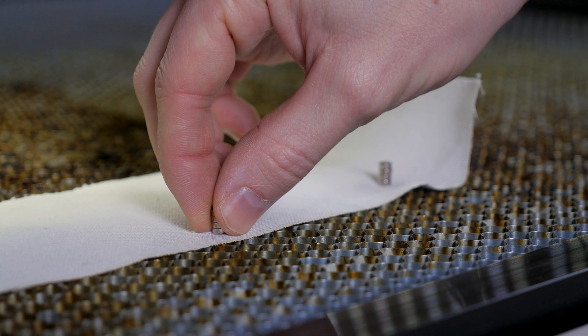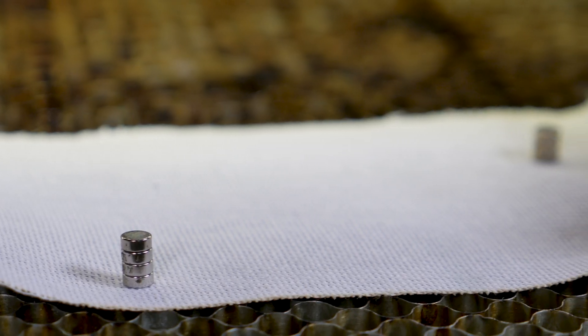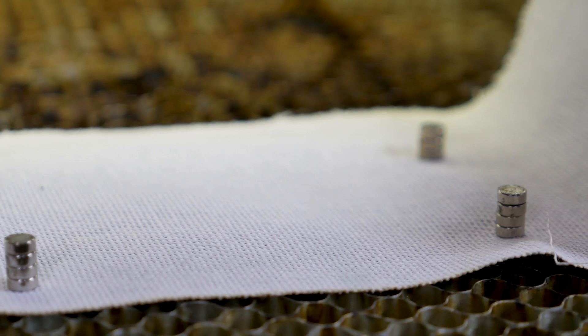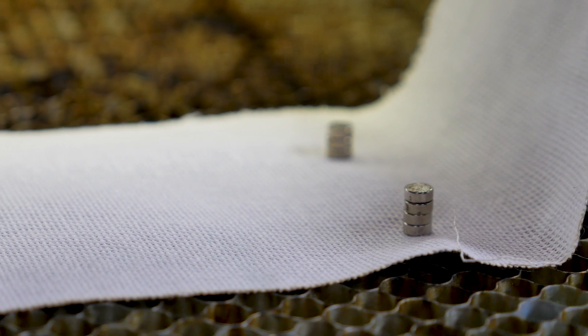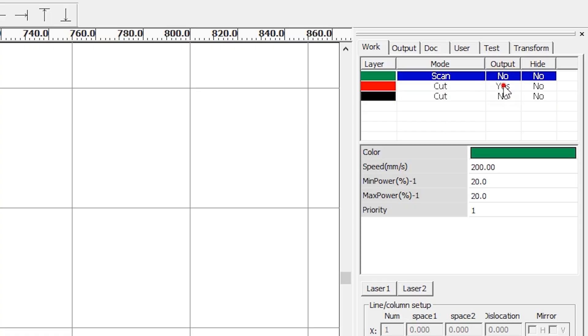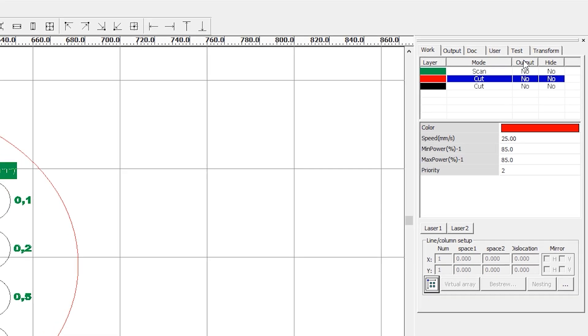If you work with thin materials such as fabric or leather, we recommend using neodymium magnets to attach the material to the working area. Back to the settings in the control software. We start with the top row of the squares.